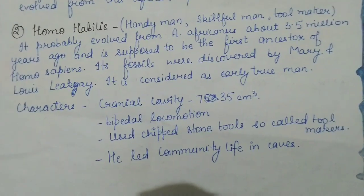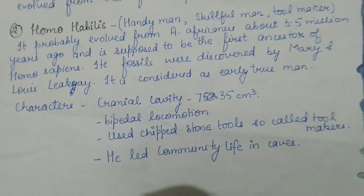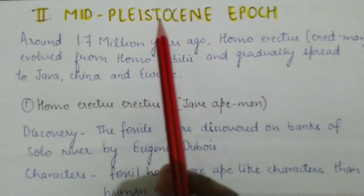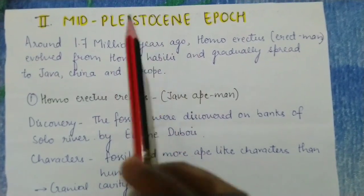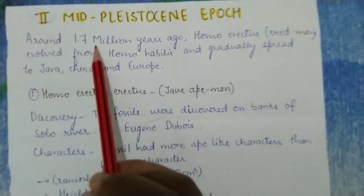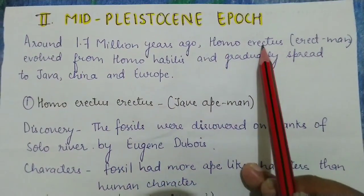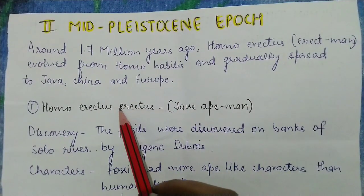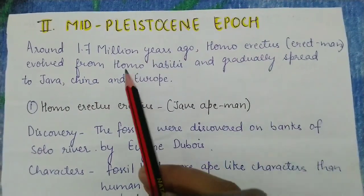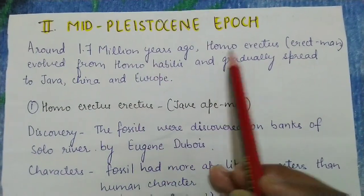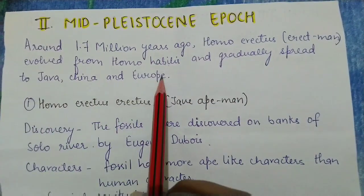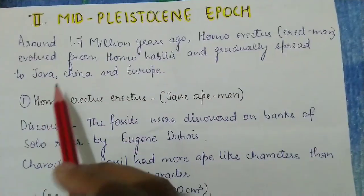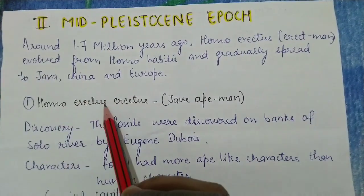So that is the early Pleistocene Epoch, starting from Australopithecus to Homo habilis. Now let's move towards the middle Pleistocene Epoch. Around 1.7 million years ago, Homo erectus evolved from Homo habilis and gradually spread to Java, China, and Europe.